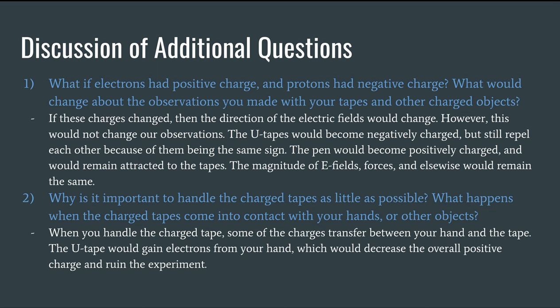However, this would not change our observations. The U-tapes would become negatively charged, but still repel each other because they're like charges. The pen would then become positively charged, but would still remain attracted to the tapes because opposite charges attract. The magnitude of the E-fields, forces, and elsewise would all remain the same.